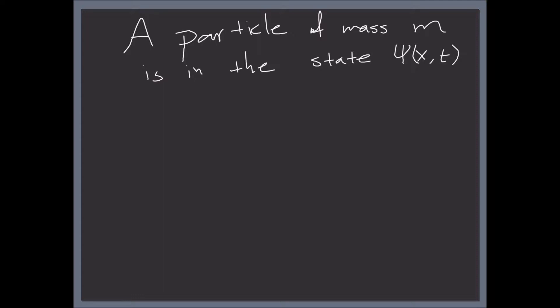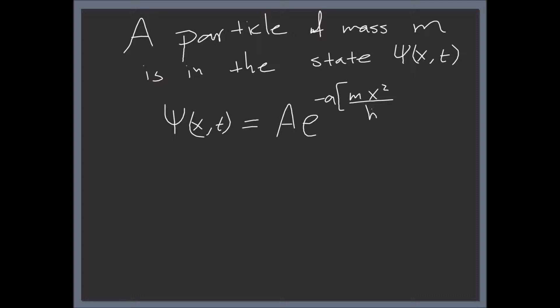Every single piece of information is inside this wave function. For this particular example, the wave function is given by the following: Psi of x and t is some constant A times exponential to minus a times M x squared divided by h-bar, where h-bar is just a number, plus i*t.